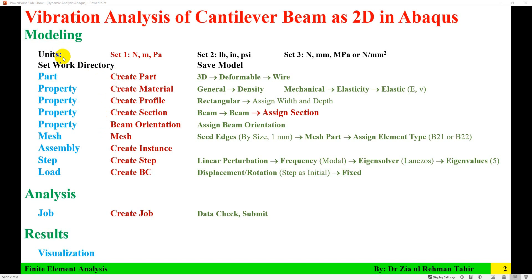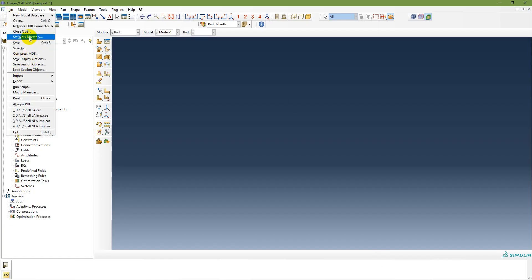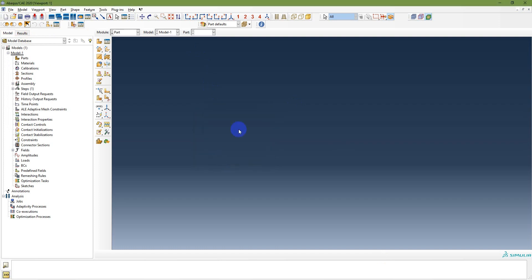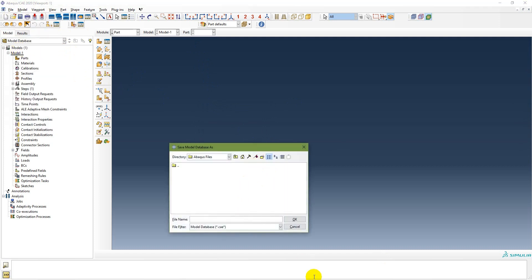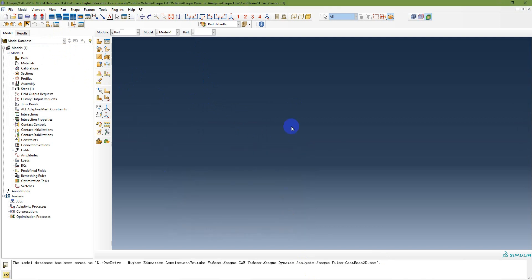In Abaqus CAE, there are no set units, so you have to select your own. One option is Newton-meter-Pascal; another is pound-inch-PSI; you can also use Newton-millimeter-megaPascal. I am going to use Newton-meter-Pascal. First, set the work directory and save the model: go to File, Set Work Directory, then save the model as 'Cantilever Beam 2D'.